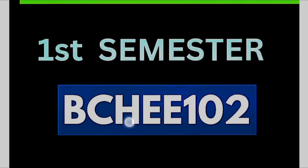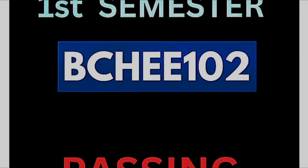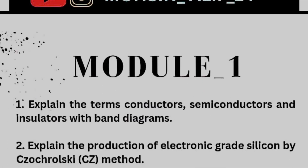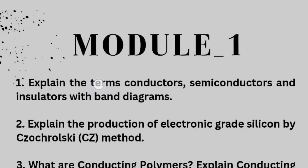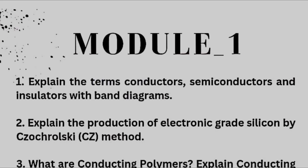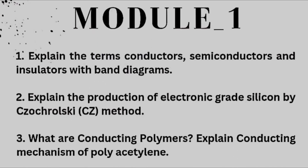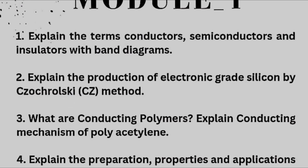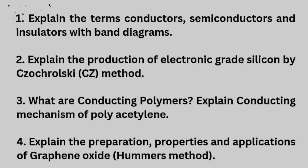This is Applied Chemistry for triple stream students, subject code BCHPE102. This is a passing package for your particular subject. Let me discuss model-wise important questions which will surely come in the examination if you want to score in the chemistry subject. From Module 1, the first important question is: explain the terms conductors, semiconductors, and insulators with band diagrams.